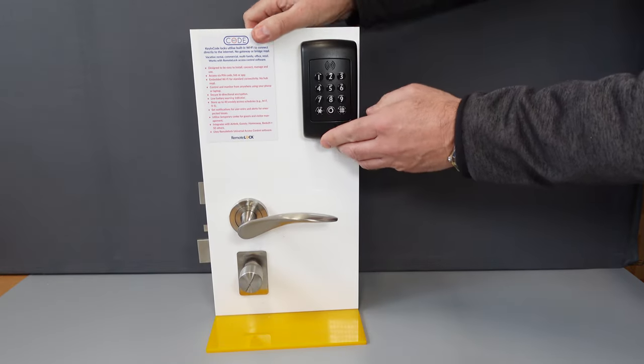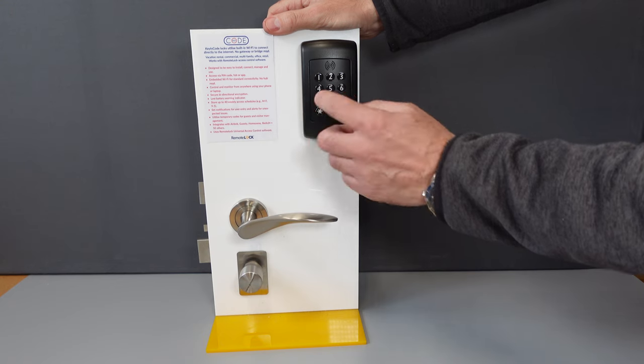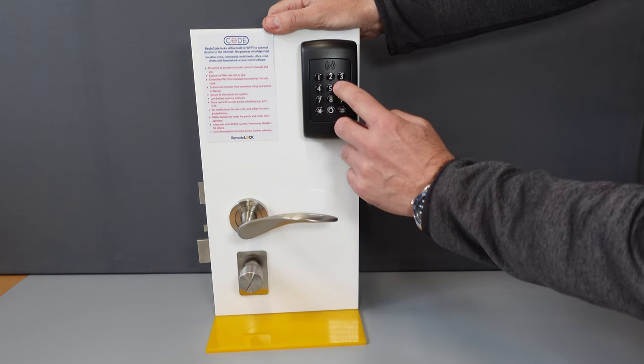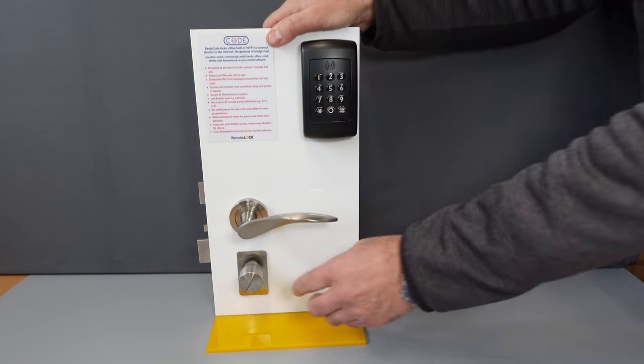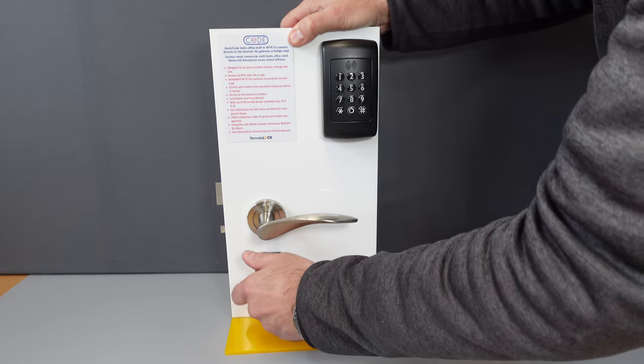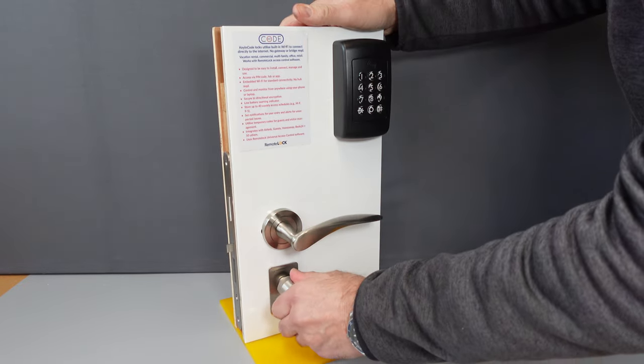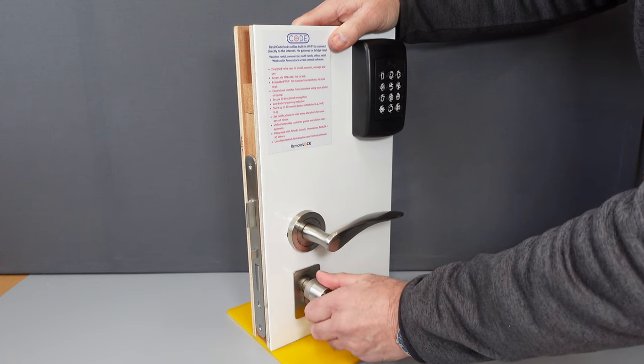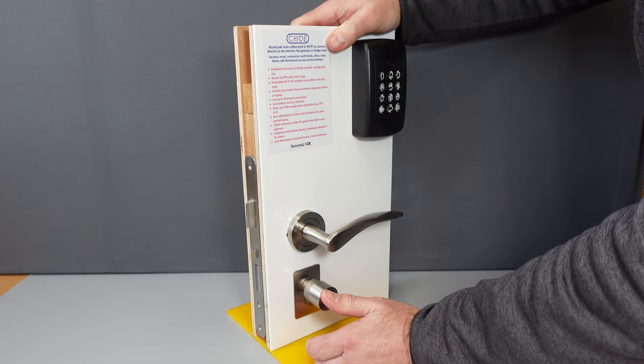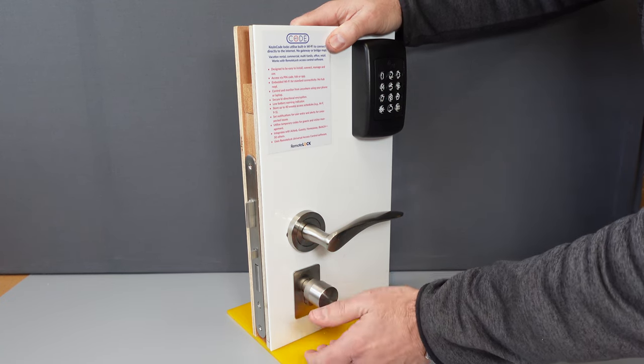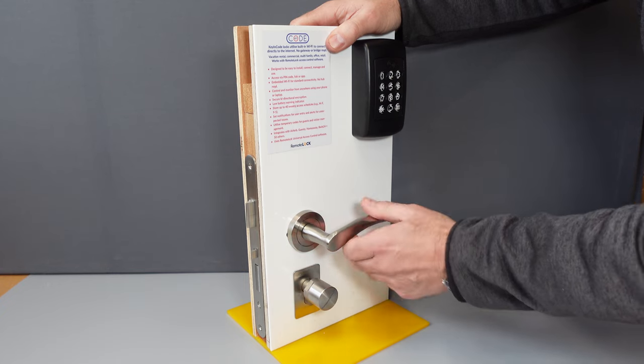When we type in a valid credential like a pin code, or it could be a fob, the cylinder beeps twice and it opens. In this case we've got a dummy handle so it's also opening the latch as well, and then it will beep again to indicate that it's locked. So now it's locked.